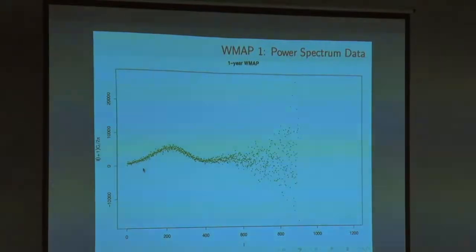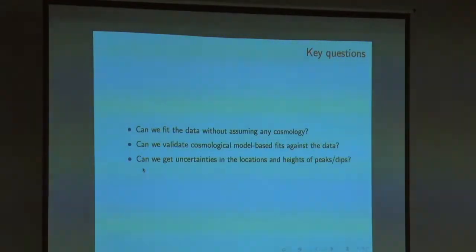In fact, this data comes from a satellite mission called Wilkinson Microwave Anisotropy Probe. This is the temperature power spectrum of cosmic microwave background radiation fluctuations. The key question is: can we somehow fit the data? Come up with a functional form that explains the data without assuming too much of cosmology, without assuming too much of physics?